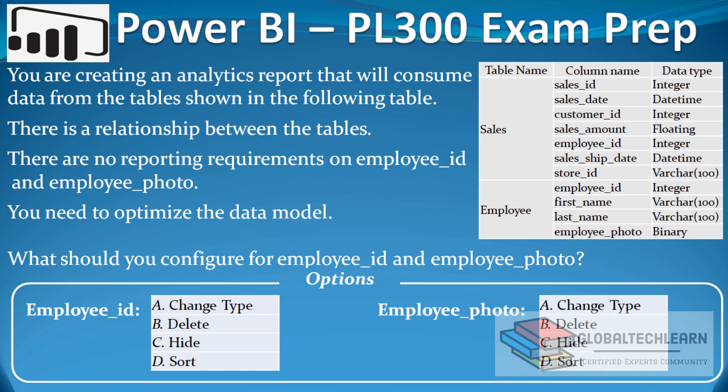The question is: you are creating an analytics report that will consume data from the tables shown in the following table. On the right side, we have two tables — Sales and Employee. Under the Sales table, we have sales-related fields such as Sales ID, Sales Date, etc. Under the Employee table, we have employee-related information such as Employee ID, Employee Name, and Photo. There is a relationship between the tables, with Employee ID as the common field, so we would need to create a relationship based on these fields.